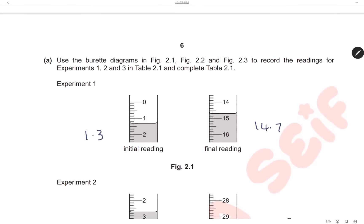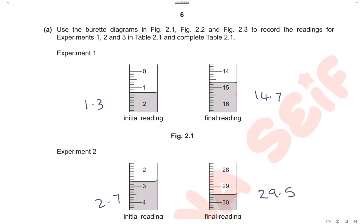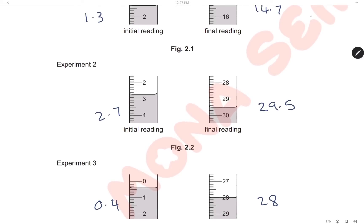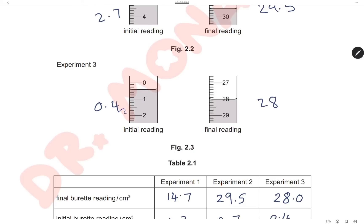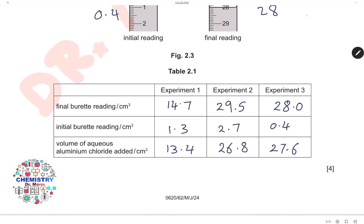Here we have the initial and final burette readings for the three experiments. In experiment 1, the initial reading was 1.3 cm³ and the final reading was 14.7 cm³. In experiment 2, the initial was 2.7 cm³ and the final was 29.5 cm³. In experiment 3, the final reading was 0.8 cm³. Calculating the volume used by subtracting initial from final: experiment 1 gives 13.4 cm³, experiment 2 gives 26.8 cm³, and experiment 3 gives 27.6 cm³.